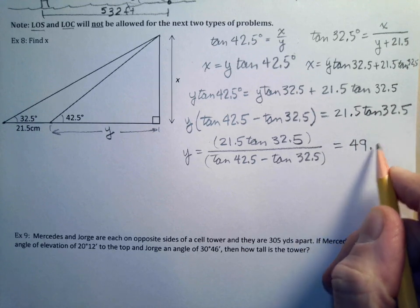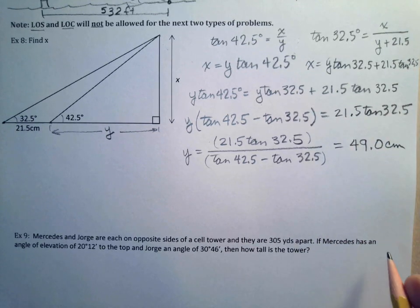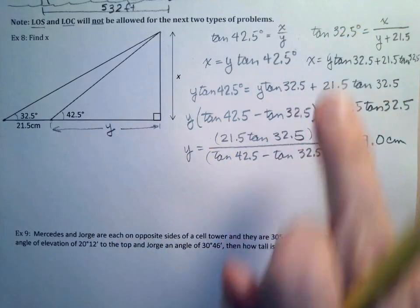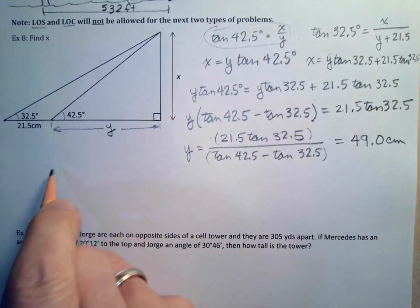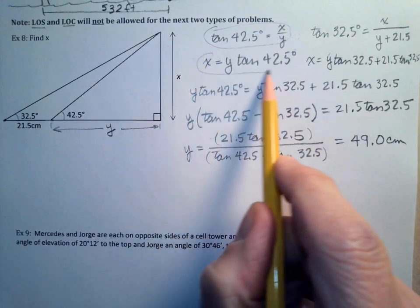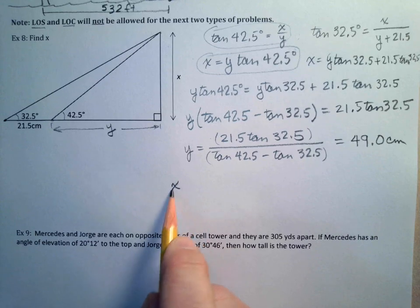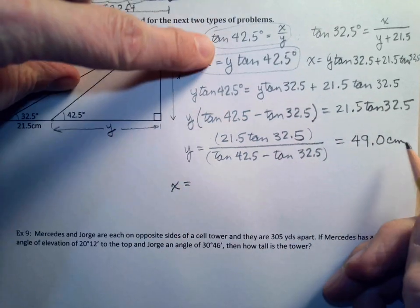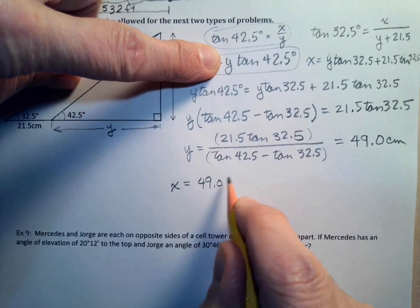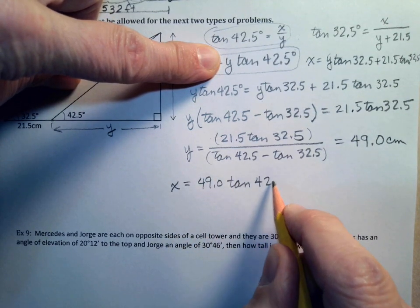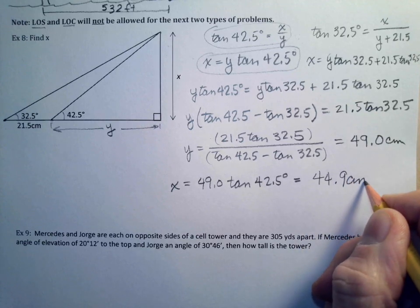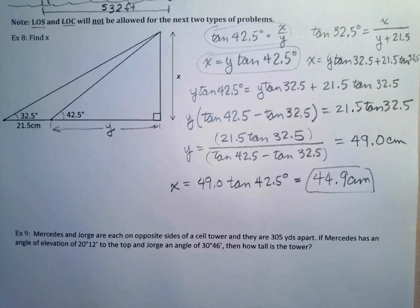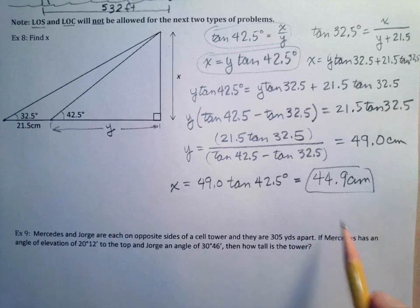That gives y ≈ 49.0 centimeters. Now plug back into x = y·tan(42.5°) = 49.0 × tan(42.5°) ≈ 44.9 centimeters. So the height of the object is approximately 44.9 centimeters.